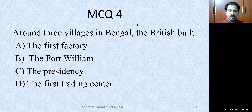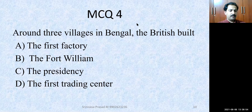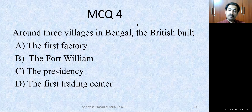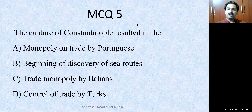MCQ number 4: Around three villages in Bengal, the British built — the first factory, Fort William, the presidency, or the first trading center? The first factory they built was in Surat, so that is not correct. The presidency covered entire Bengal, not just three villages. The first trading center of the British was Surat. Therefore, the correct option here is Fort William. Congratulations to all who answered correctly.